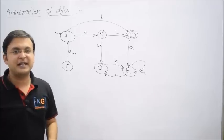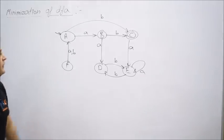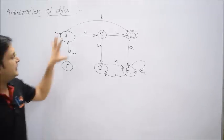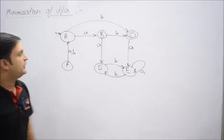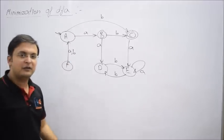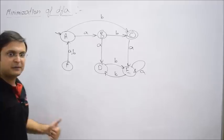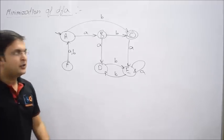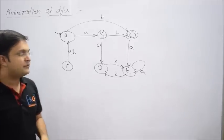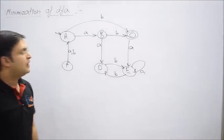Now in the starting I have taken a simple example. Here you see it's a DFA and the question is to minimize it. Let's go step by step. What is step number one? You try to search whether it has a dead state or not.